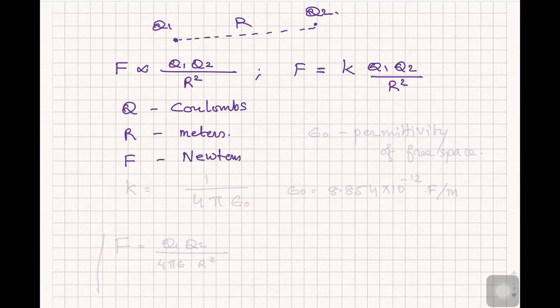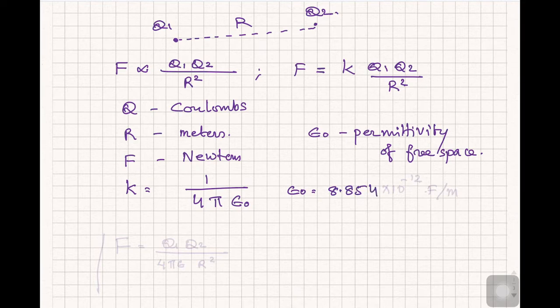And the proportionality constant, K, is now defined as 1 by 4π epsilon. In free space, this will become epsilon zero, epsilon naught. And this epsilon naught is nothing but the permittivity of free space, which is evaluated as 8.854 into 10 power minus 12 farads per meter, that's a unit of epsilon.